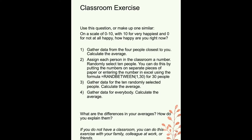Next, assign each person in your group a number and randomly select 10 people from your classroom — you can find how to do this in Excel. Gather data from those 10 people and calculate the average, then see how it differs. Then gather data for everybody and calculate that average too. What do you think about those differences? If the differences are big, how would you use or talk about the data? If the differences are small — one point or less — how do you explain that?